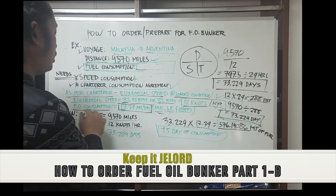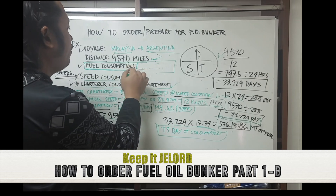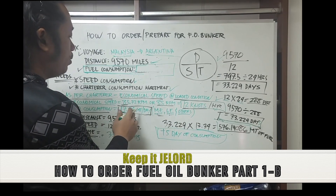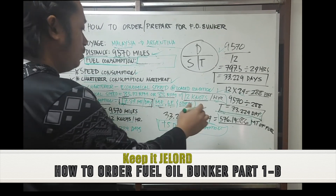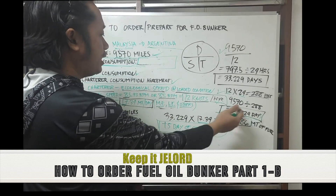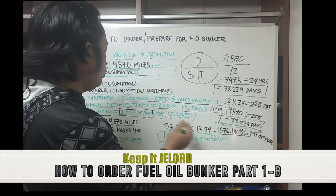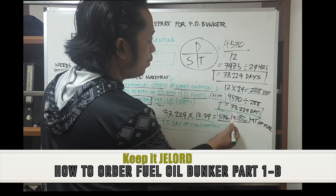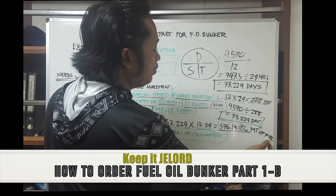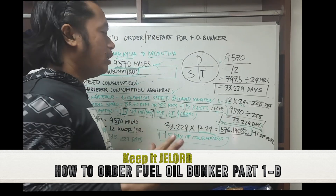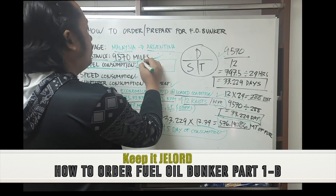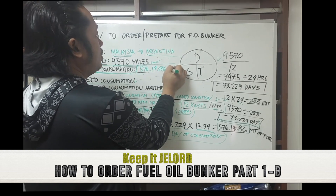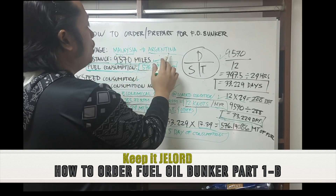Now let's go back to the fuel oil consumption figure. At 12 knots, the consumption is 17.34 metric tons per day. Since we have already calculated 33.229 days, we multiply: 33.229 × 17.34 metric tons per day. The answer is 576.19 metric tons of fuel needed for sailing from Malaysia to Argentina.